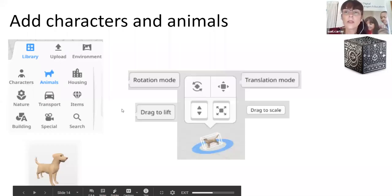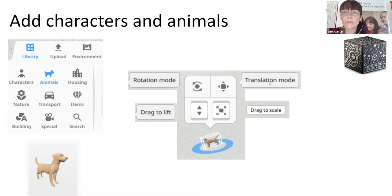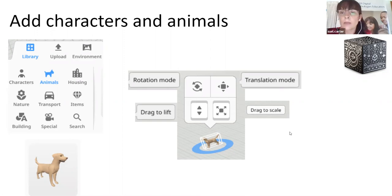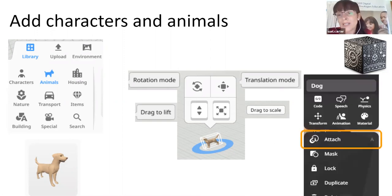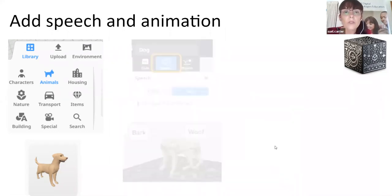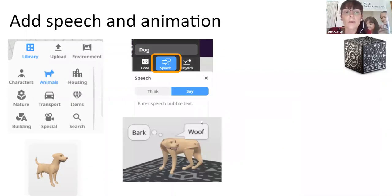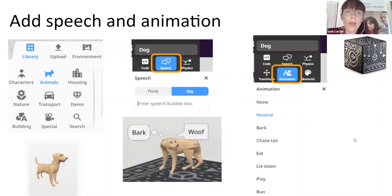Going over what we've looked at: we have a library where we can bring in different characters, animals, and objects. We have different options for every character to move them around, make them larger and smaller, and angle them in different ways. It's really important to use the attach option to attach it to the Merge Cube. We looked at speech, thinking, and animation — and very shortly we're going to give this a try ourselves.